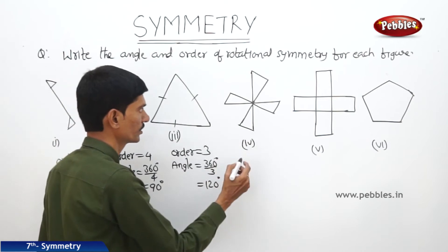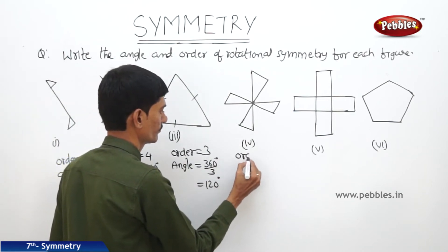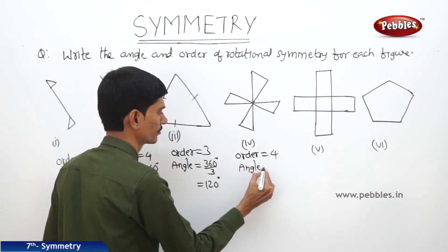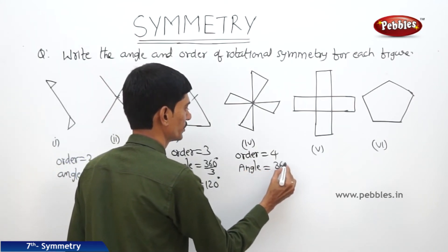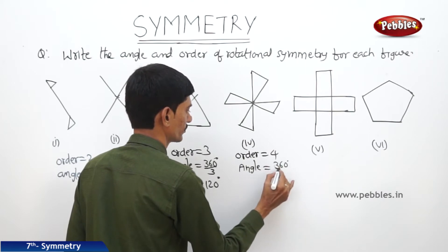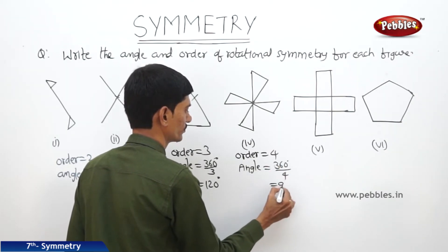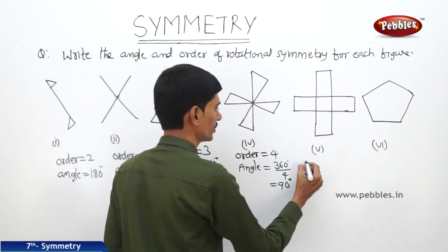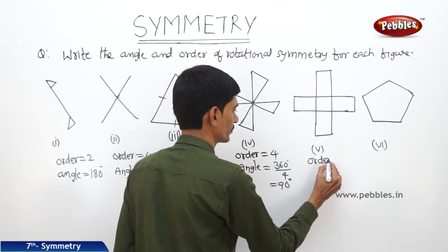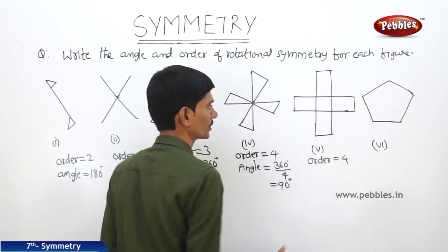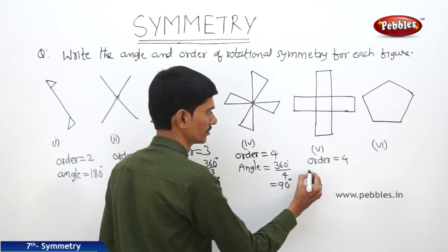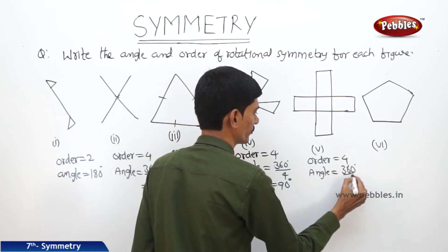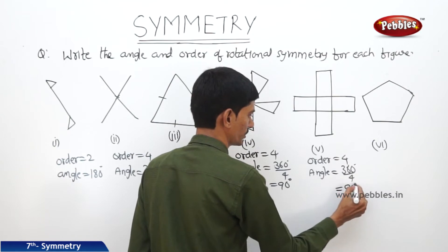Now in case of this figure, the order of rotational symmetry is 4. The angle is 360 degrees divided by 4, which equals 90 degrees. Here also the order is 4 because 4 times it gets back its original position, and the angle 360 divided by 4 equals 90 degrees.